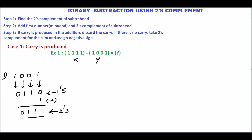In step 2, add X which is 1, 1, 1, 1 and the 2's complement of Y which is 0, 1, 1, 1. Adding: 1 plus 1 gives sum 0 with carry 1.